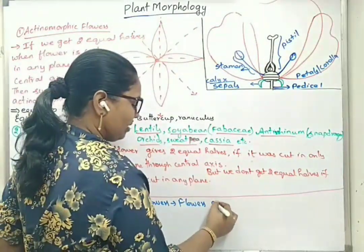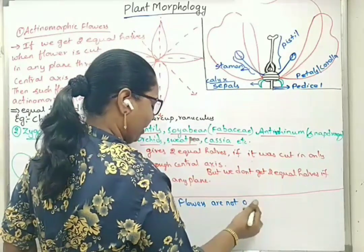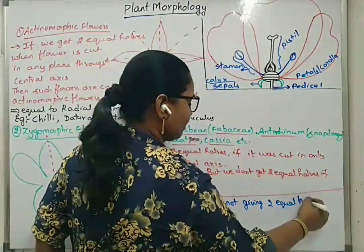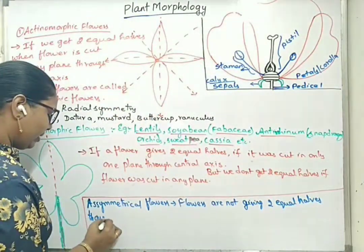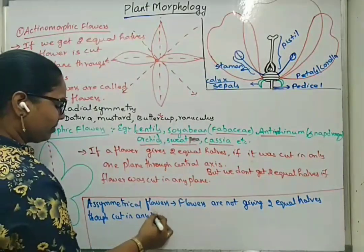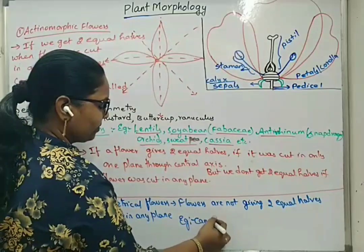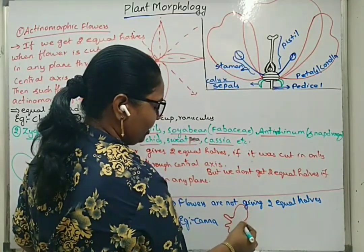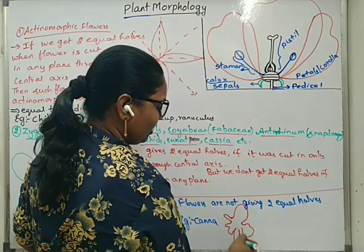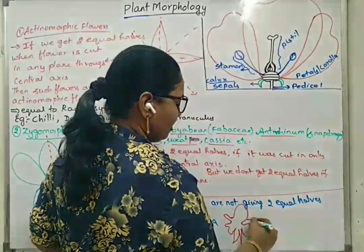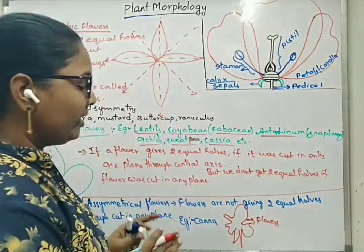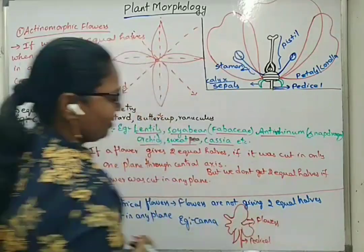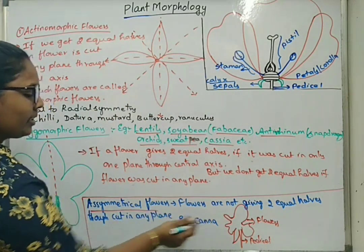Asymmetrical type of flowers are not giving two equal halves when cut in any plane. An example is canna — here one petal is very small, another is zigzag, another is big, and the others are different shapes. If the flower is like this, in such cases we don't get any equal half if we cut in any direction.